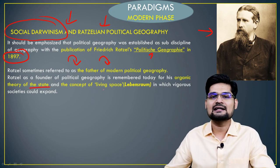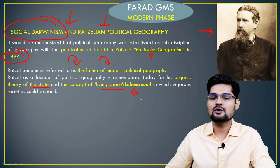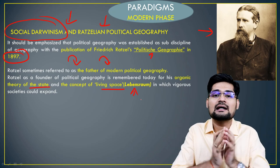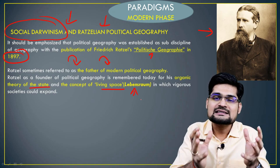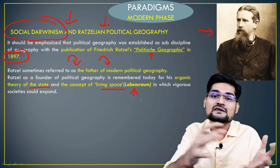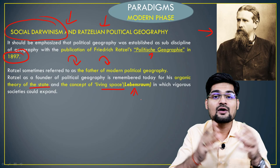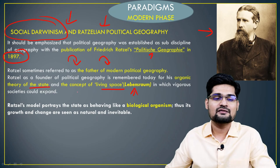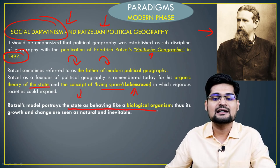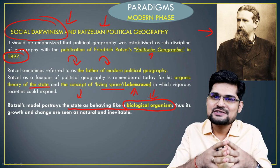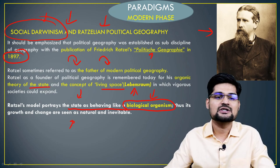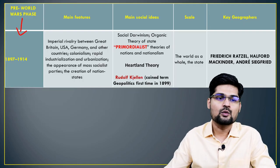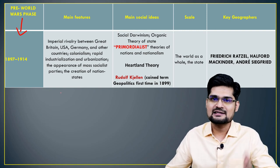In Ratzel's organic theory of state and the concept of living space — Lebensraum — he argued that just as human beings grow with age and occupy their own cultural spaces, states also function like human bodies and grow with time. This was a very influential thought process for the Germans and later the Nazis for their expansionist approach. His basic idea was to portray that the state behaves like a biological organism — which is why we call this the social Darwinism or Ratzelian political geography phase.